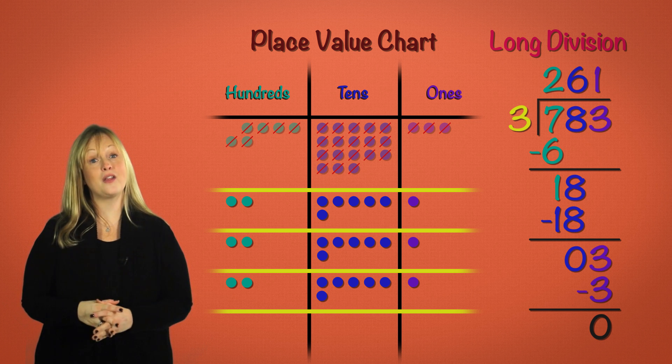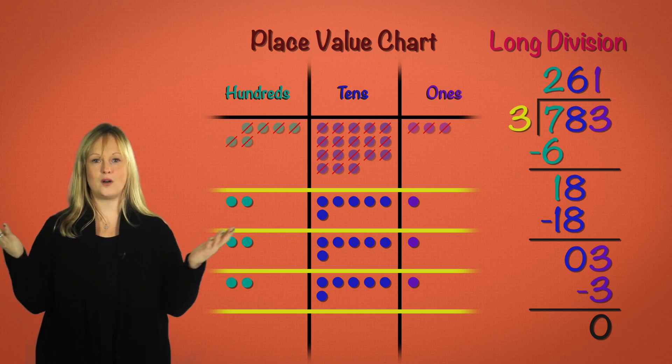783 divided by three equals 261 with no remainder.